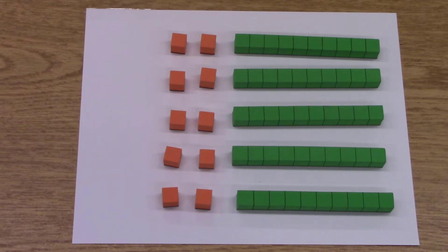These are my partial products. I will add them to find the total. 50 plus 10 equals 60. There are 60 players in all.